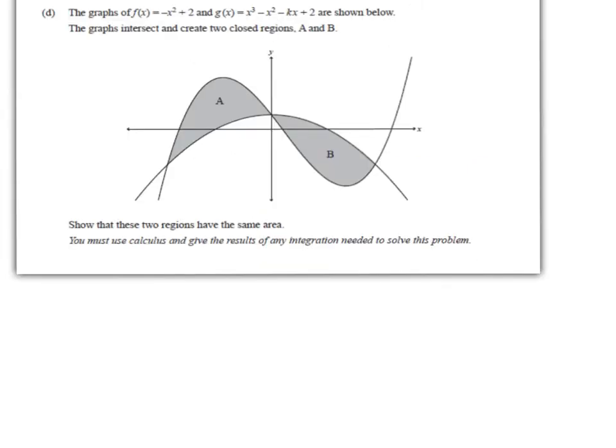This first question looks at the graphs of two functions shown below. The graphs intersect and create two closed regions, A and B. Your job is to show that these two regions have the same area.